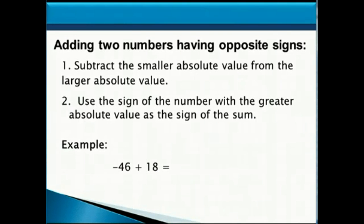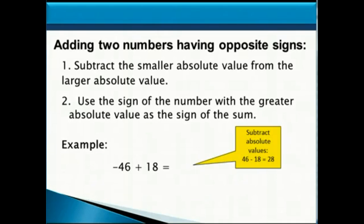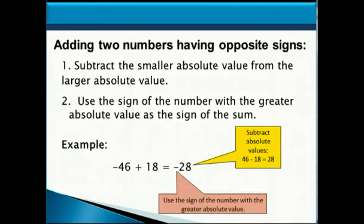Let's look at another example. Let's add negative 46 to positive 18. These both have opposite signs, so we find the difference between their absolute values: 46 minus 18 gives us 28. Since negative 46 has the bigger absolute value and it's a negative number, our answer becomes negative 28.